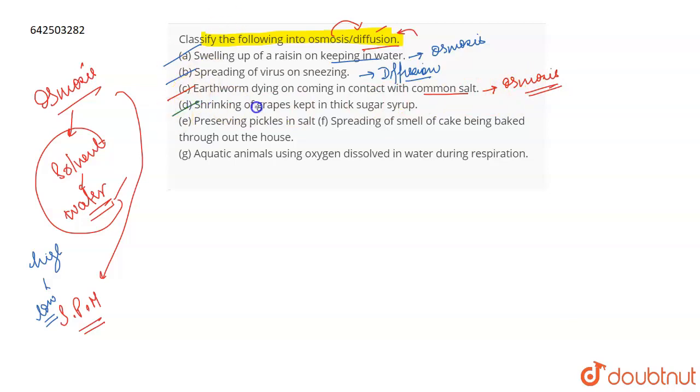Talking about the D part which is shrinking of grapes in a thick sugar syrup. This again is osmosis because the movement of solvent which is water is taking place. So this has to be osmosis.